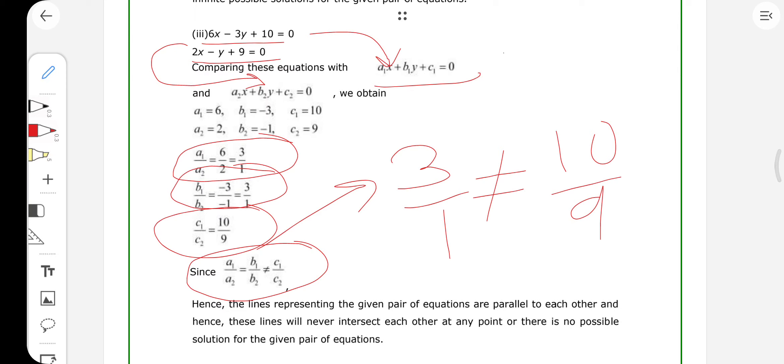Hence, lines representing the given pair of equations are parallel to each other. And hence, these lines will never intersect each other at any point. Or we can say, there is no possible solution for the given pair of equations.